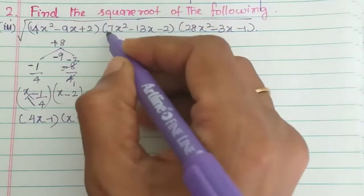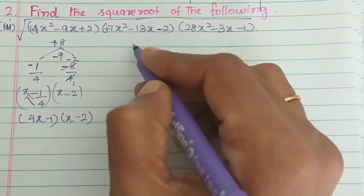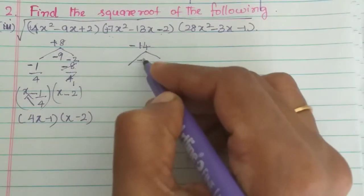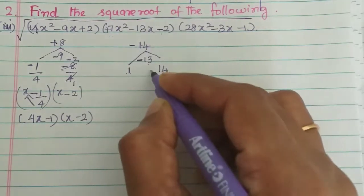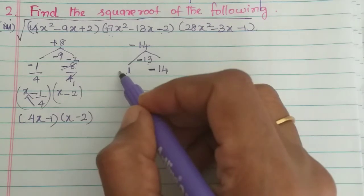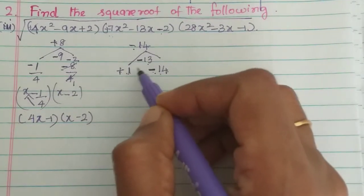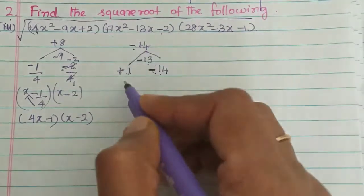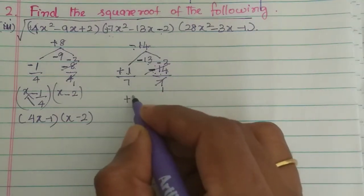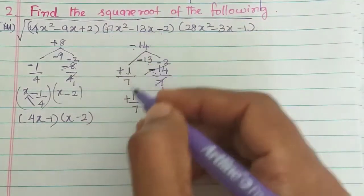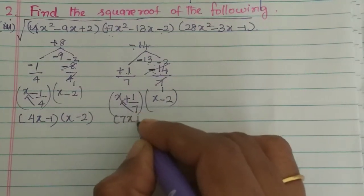For the second expression, it has plus and minus signs. 7 times 2 is 14, and the middle term is minus 13. So 14 minus 1 is 13. The bigger number is minus, so minus 14 and plus 1. Dividing by coefficient 7 gives plus 1/7 and minus 2. So the factors are 7x plus 1 into x minus 2.